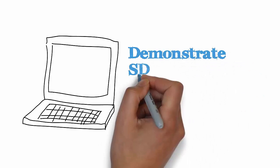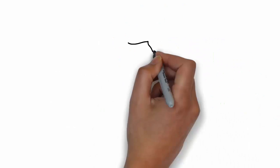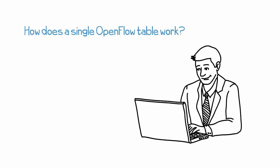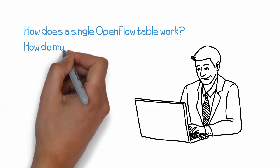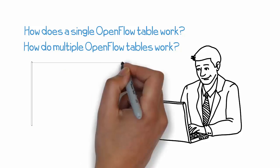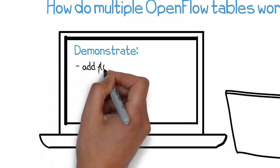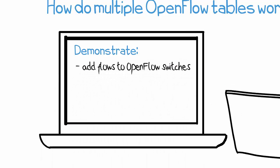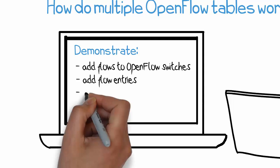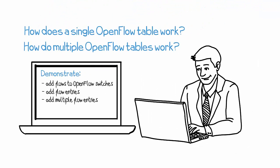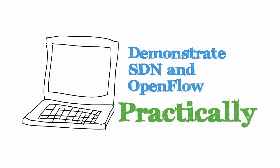In this course, as much as possible, I'm going to demonstrate SDN and OpenFlow practically. For example, we're going to answer questions such as: how does a single OpenFlow table work, and how do multiple OpenFlow tables work? Rather than just talking about it, I'm going to demonstrate and show you how you can practically add flows to OpenFlow switches using an application, and then add those flow entries with different priorities within a single table or add multiple flow entries to different tables, and then see the result of the flow entries you've added.